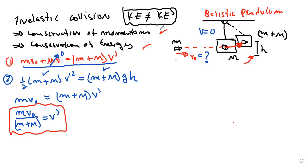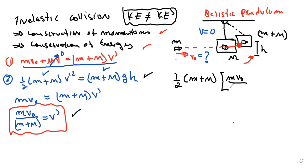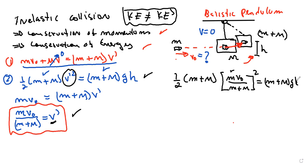Equation two is conservation of energy: one half of (little m plus big M) times V prime squared equals (little m plus big M) times G times H. V prime here is little m times V0 divided by (little m plus big M), so we substitute that in and square it. We can cancel the (little m + big M) term from both sides.